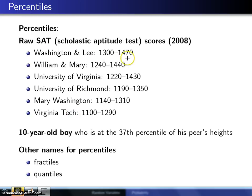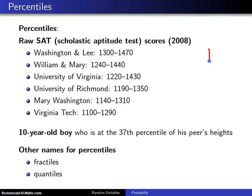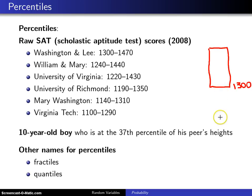Let me go back to the Washington and Lee scores again. These all came from data, and earlier we looked at the box plot, and that could apply here as well. The 25th percentile is 1300, and the thinking associated with that is 25% of the scores were below 1300 and 75% were above 1300. Likewise, 1470 would be the 75th percentile, with 25% of the scores above that and 75% below.